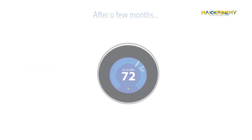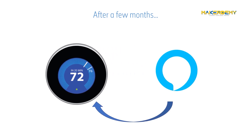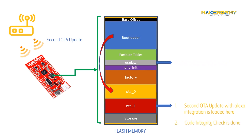Let's say a few months later, your company decided to add a new feature like Alexa integration to the thermostat. This time, when you send the OTA update code via Wi-Fi, it will be written into OTA_1 partition and the OTA data partition will point the bootloader to this partition rather than OTA_0 by setting the boot flag. In effect, the flash memory will have the latest code, the security update code, the IoT update code, and the initial factory firmware code.